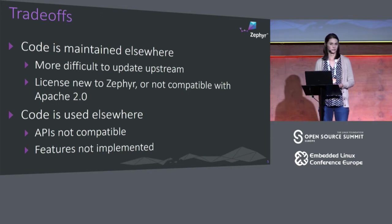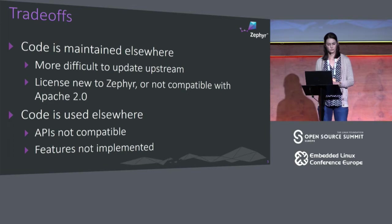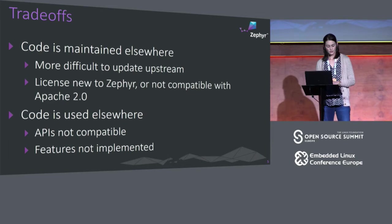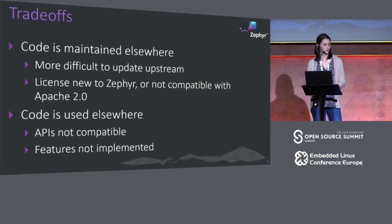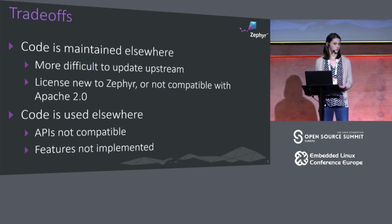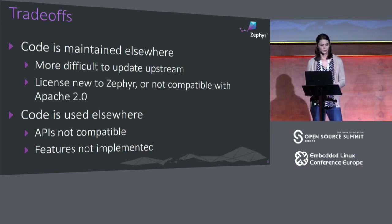Occasionally we do sometimes see licenses that aren't necessarily compatible or are new. The one case we've seen so far was just a new license to Zephyr — it was a standard open source license but not one we'd seen before. Within the project, we try to have new code under the Apache 2 license, and for imported code like HALs we've generally accepted BSD 3-clause. But if there's another license we haven't seen before, we've had to go through the process of working with the governing board to determine if that license is acceptable for the project.